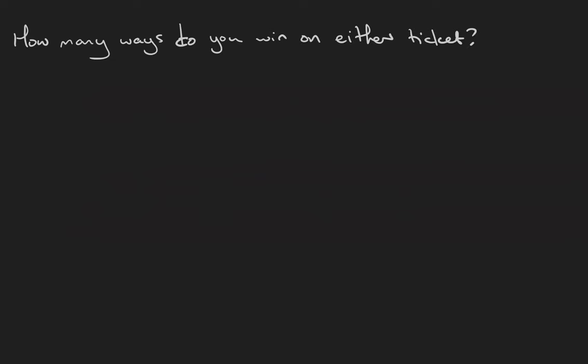This question is a little more complicated. How many ways do you win on either ticket? That includes winning on the first ticket, winning on the second ticket, or winning on both tickets. If you win on the first ticket, there are five options for your first number times 10 options for your second number. Plus winning on the second ticket you have 10 times 5 ways to do that.